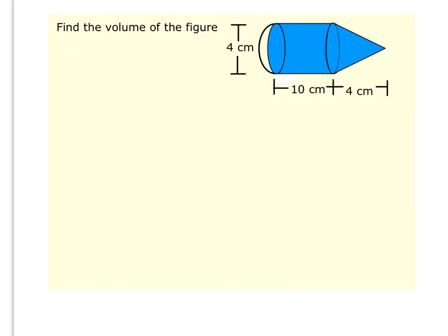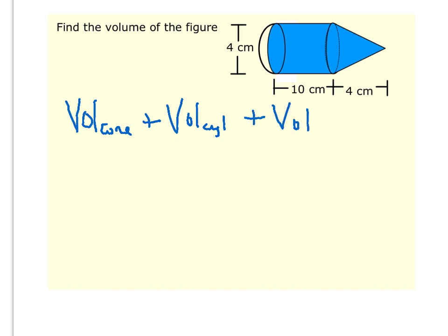In this problem we're finding volume, and we can see that this shape is made up of a cone, a cylinder, and a hemisphere. So to find the volume, we're going to take the volume of the cone, plus the volume of the cylinder, plus the volume of the hemisphere, and add those together to get the total volume.